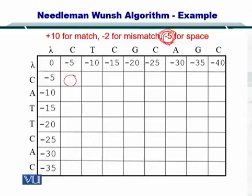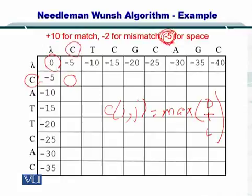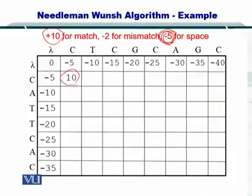The value for C(i,j) will be equal to the maximum of the diagonal, the top, and the left. The diagonal here is 0, and C and C will match, so the match will be +10. D will be 10. Top is -5, so gap is -5. The maximum will obviously be 10. The maximum of these values is simply put here. Now you have computed one element.